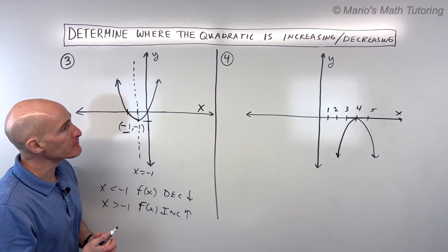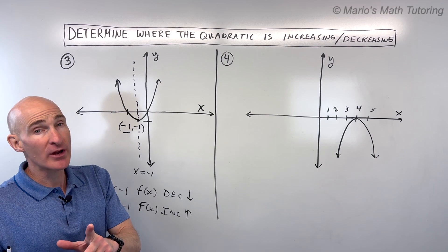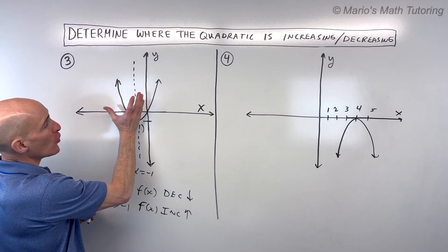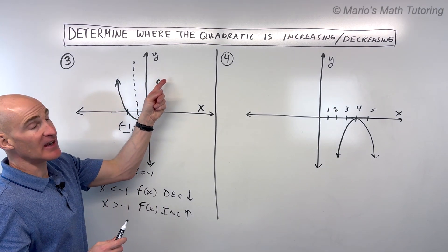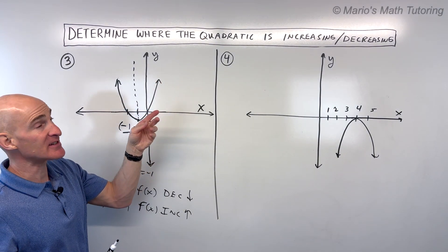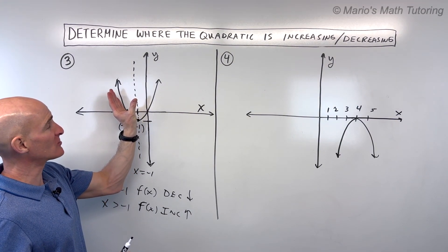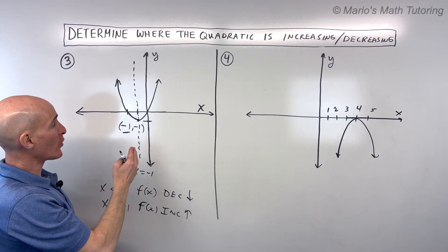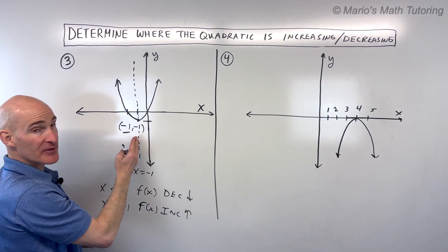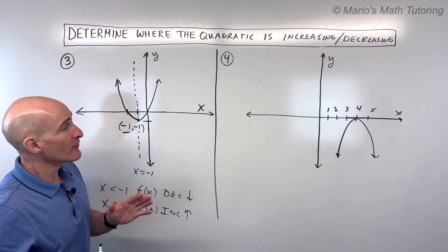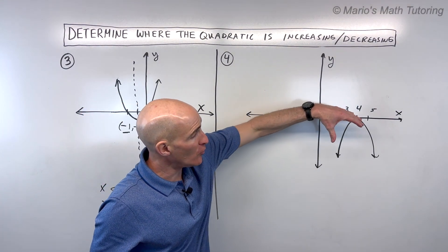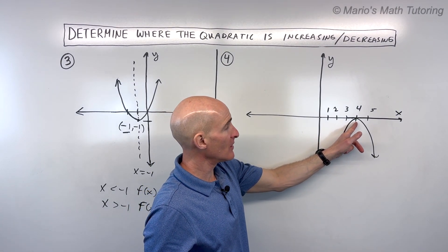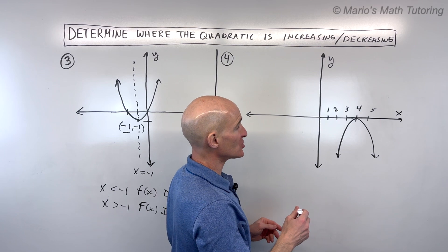Let's take a look at number four. A quick note: if you want a little hack to check your work — when the parabola is opening up, it's always going to decrease and then increase. Whenever it's opening up, the a-value is positive, and it's always going to decrease and then increase. It's just a matter of where that happens — at the axis of symmetry. For number four, this one's opening down, and notice that vertex right here at (4, 0) — that's where the direction is changing.